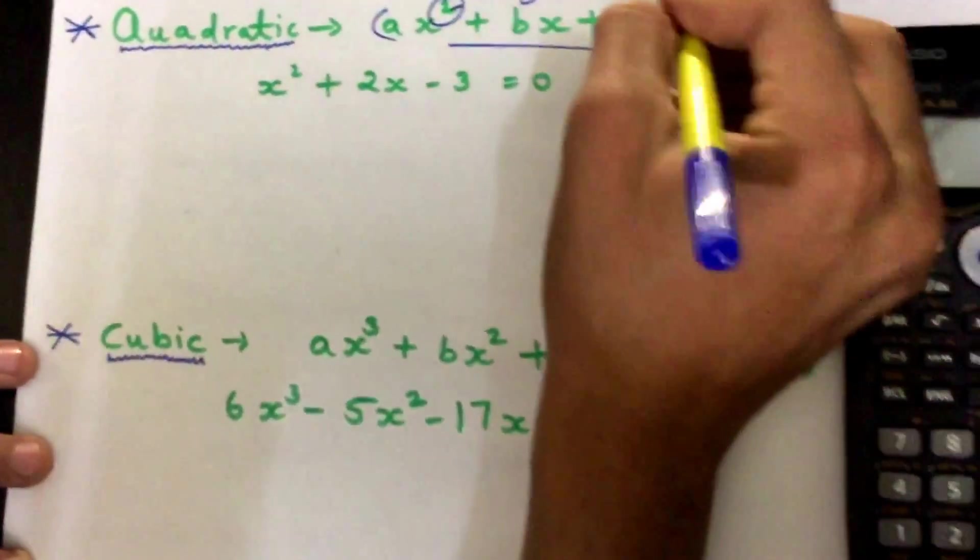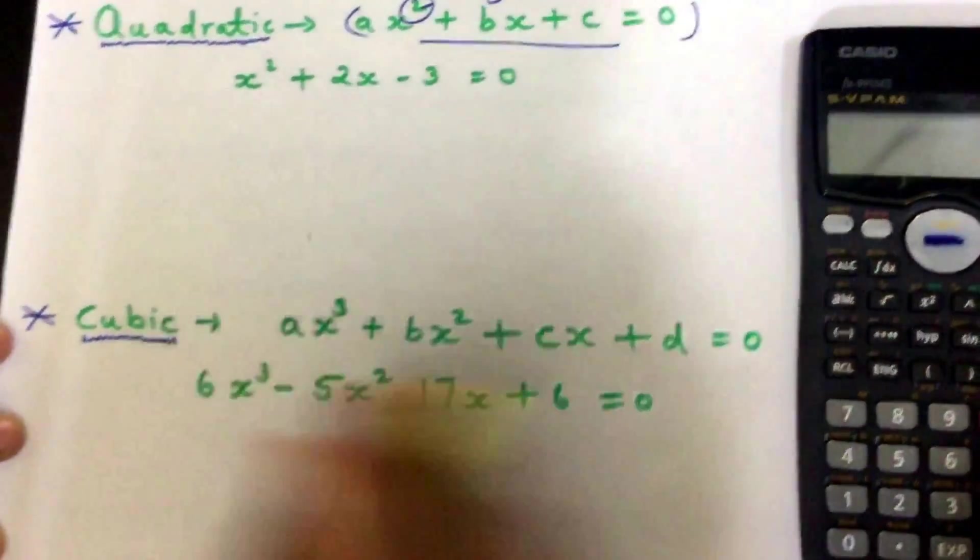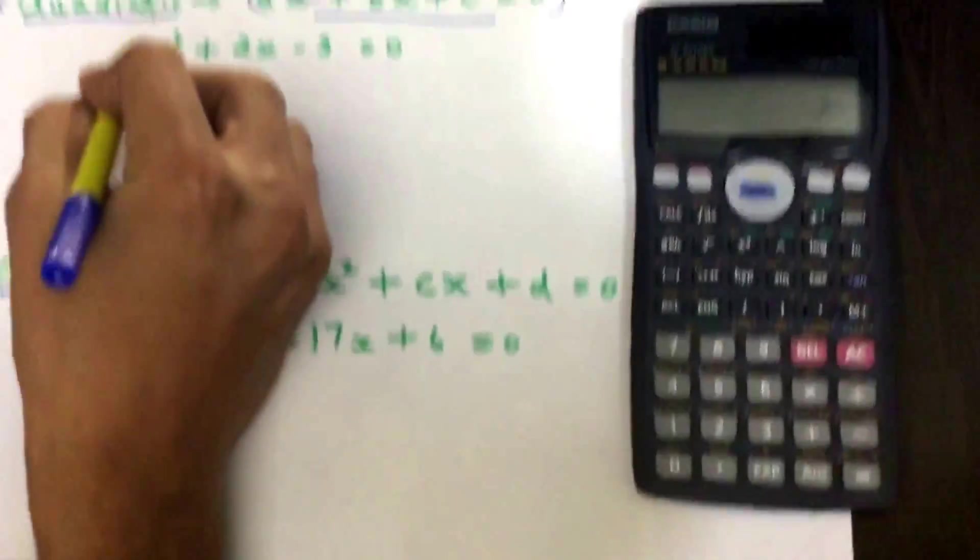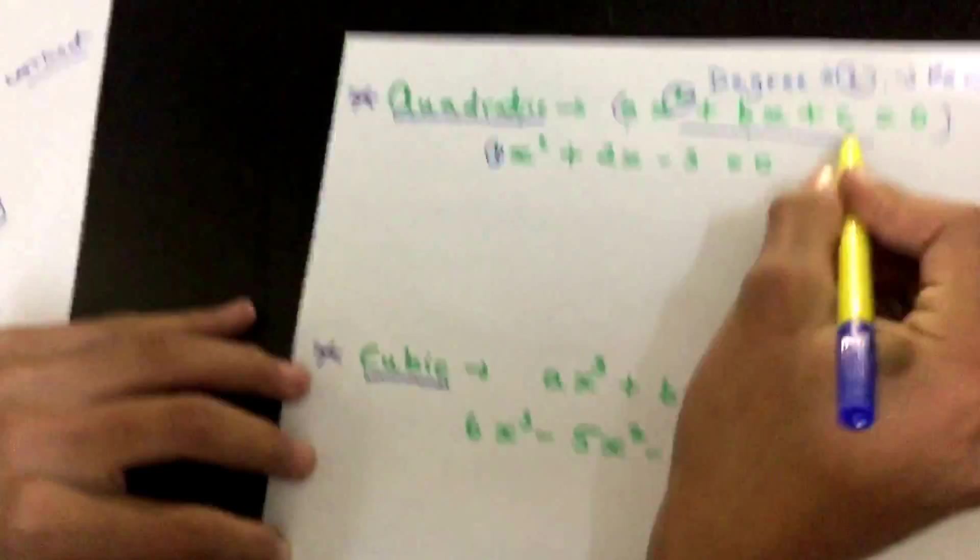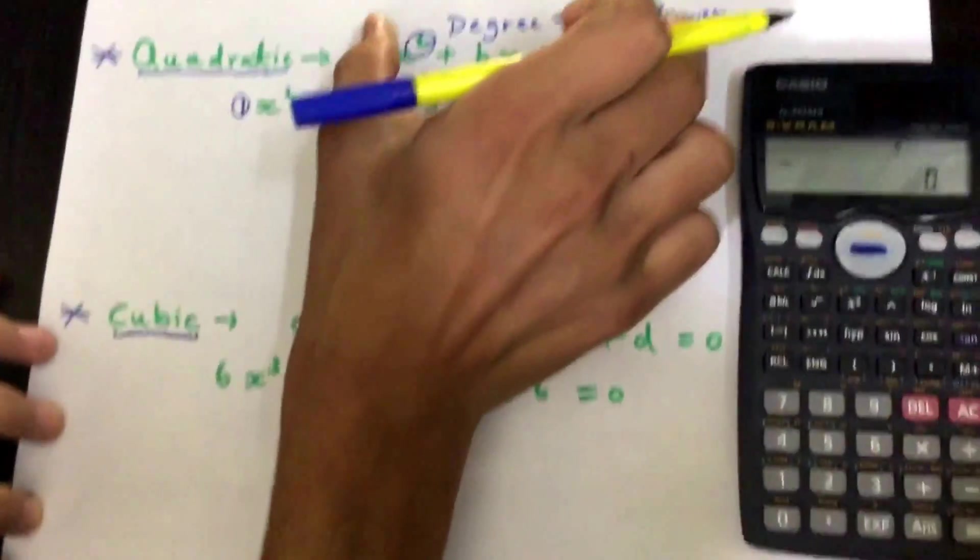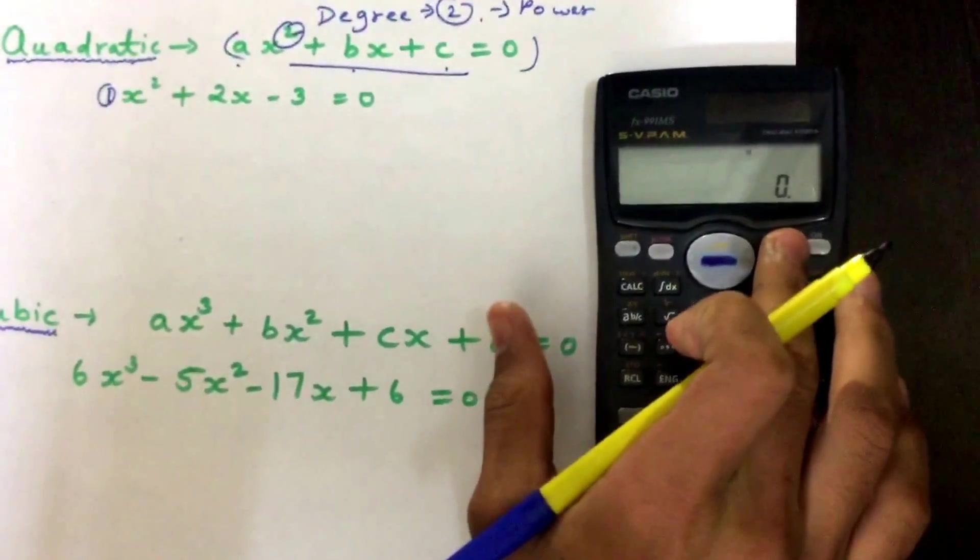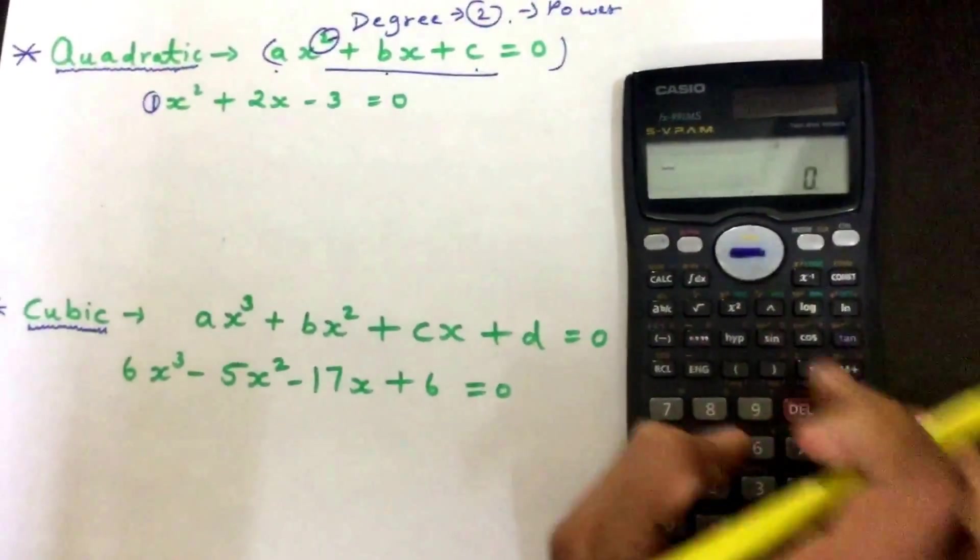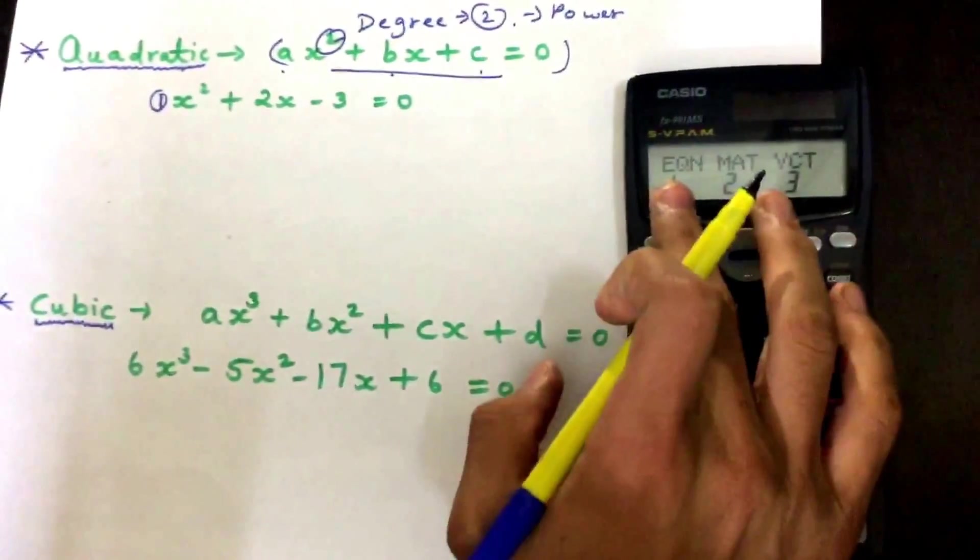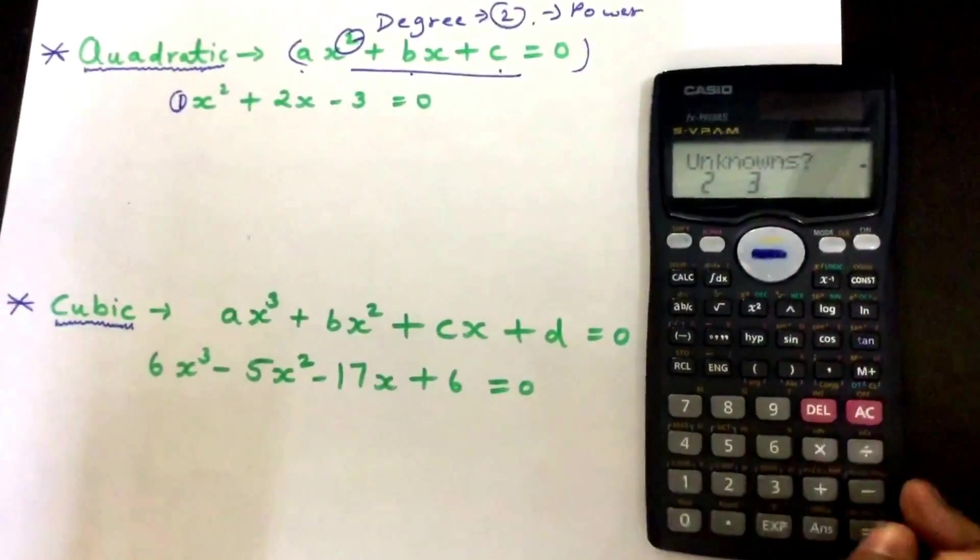We can also say it as power. Now we know the coefficients which are a, b, and c. We're going to compare this equation with this and get the answer using the calculator. I'm going to press mode three times - one, two, and three. There is the equation which we are going to solve.